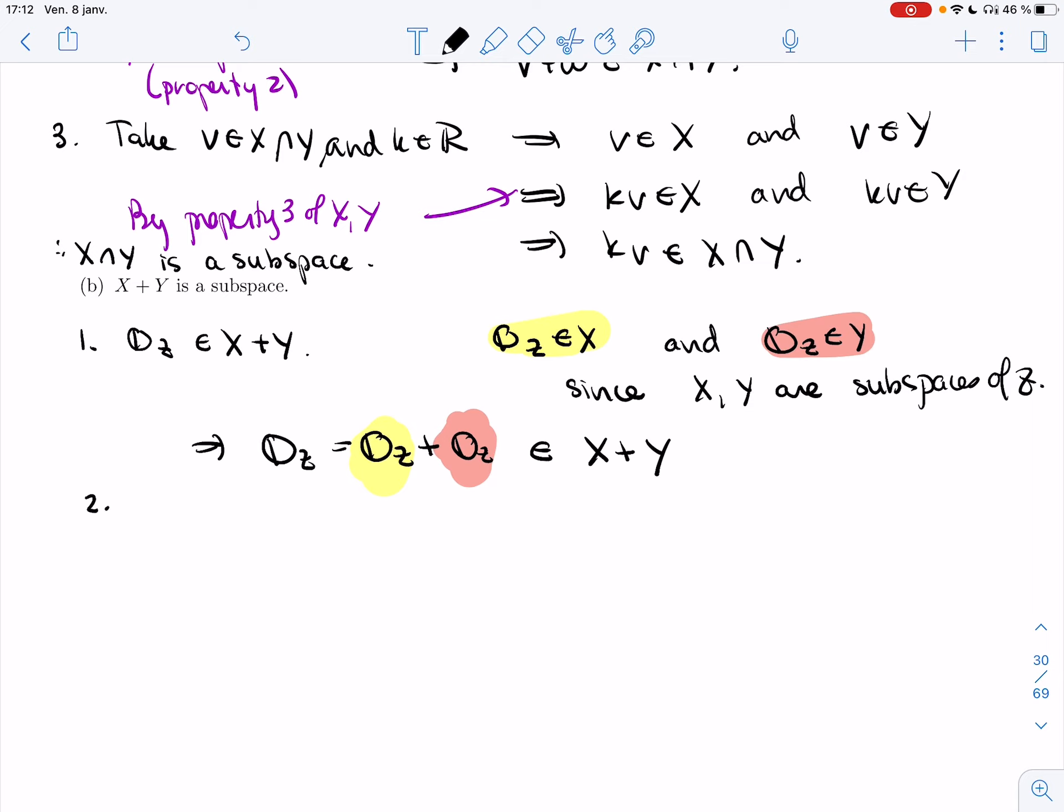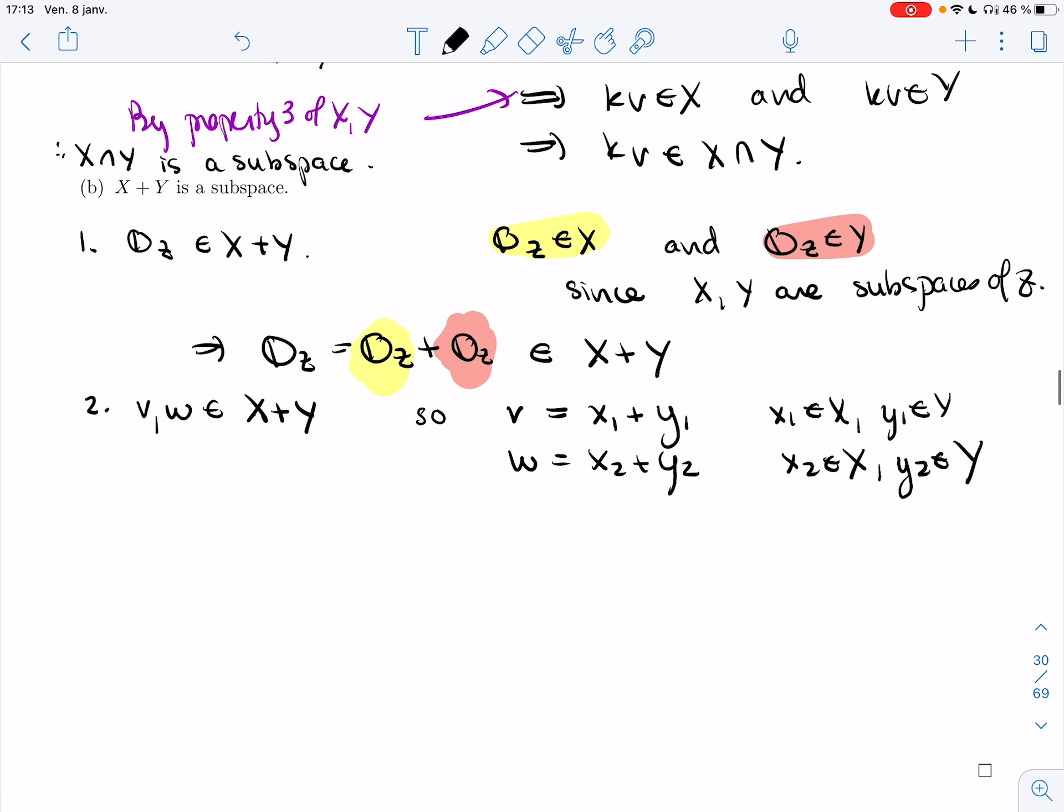Second one. I want to take v and w in X plus Y. We know it can be written as a sum, so v equals x1 plus y1 with x1 in X, y1 in Y. W is x2 plus y2 with x2 in X, and y2 in Y.